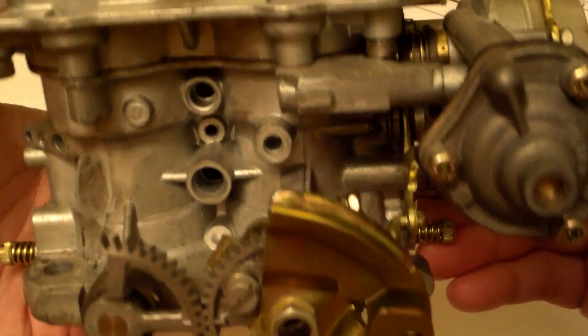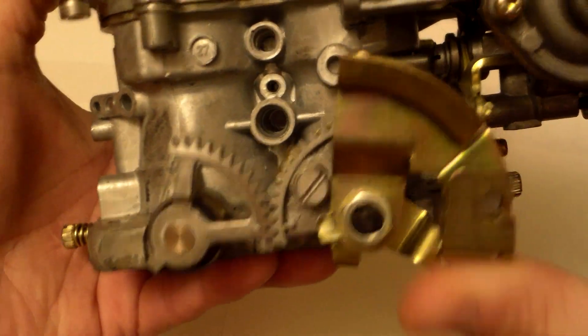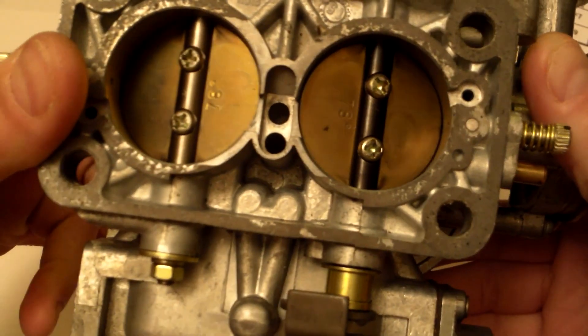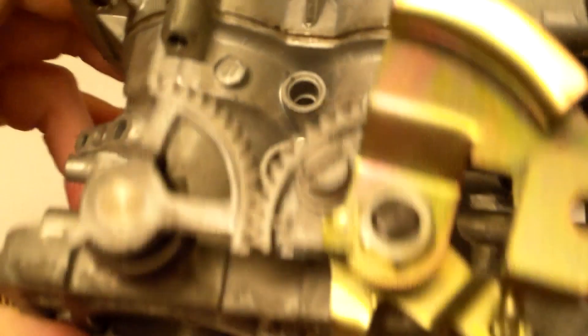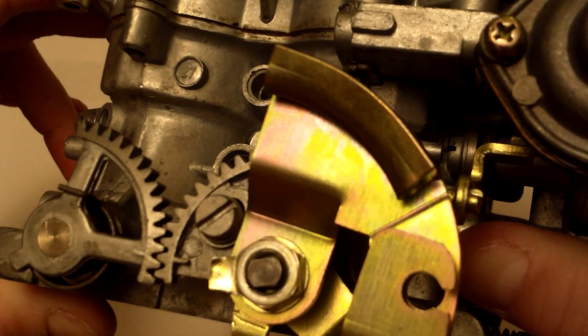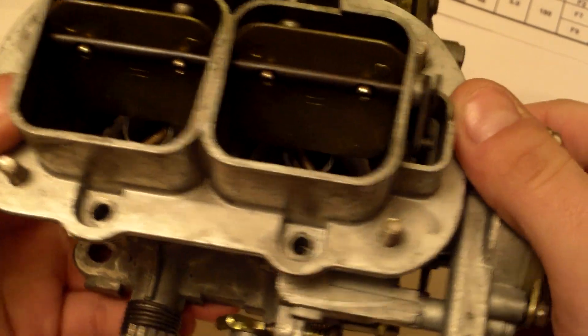This is a Weber 38/38 Outlaw. It's called that because both throttle plates are the same size, 38mm, and they're both connected, as you can see there. We will talk about this later. I just want to give a nice little overview. I picked this up on eBay for an amazing deal. It's got less than a thousand miles on it.